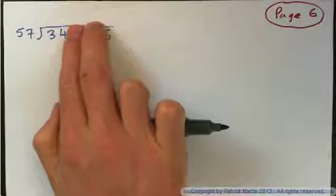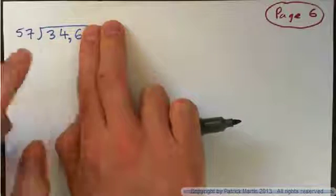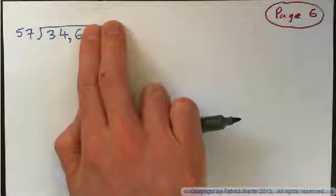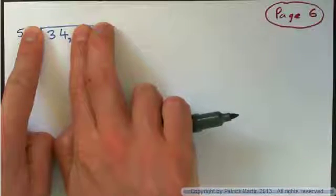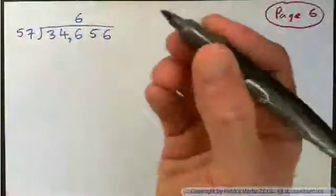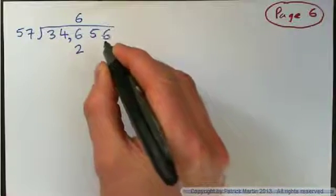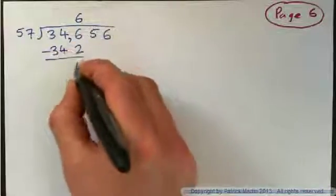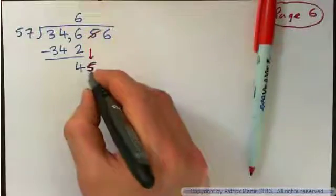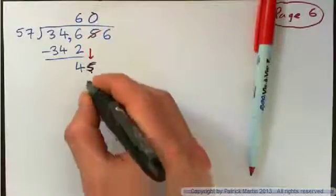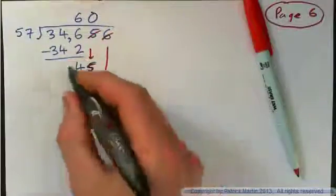57 into 34 won't go. 57 into 346: this is about 60 into 350, like 6 into 35 — about 6 times. Or crudely 5 into 34 — about 6 times. So guess 6. 6 times 7 is 42, carry 4. 6 times 5 is 30, and 4 is 34. Subtract and we get 4. Bring down the 5 — 57 into 45 goes 0 times. 0 times 57 is 0, subtract — we get 45. Bring down the 6.